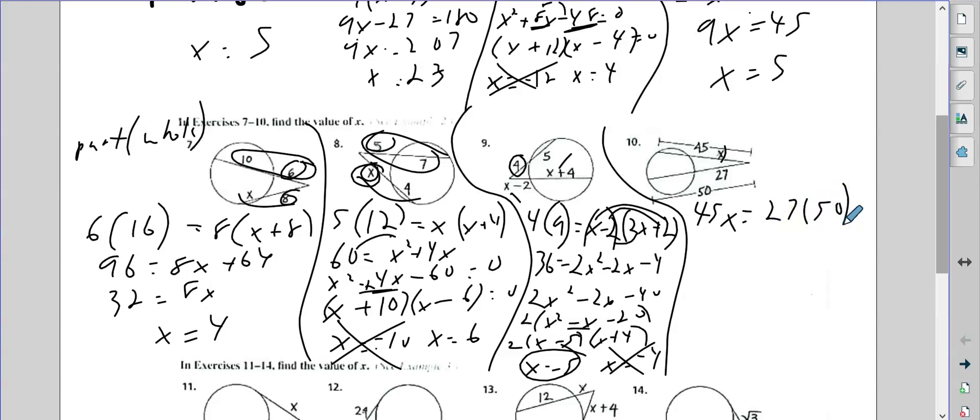Again, this one looks scary, but it's actually much easier. So 27 times 50 is 1350. Divide by 45, I get 30.